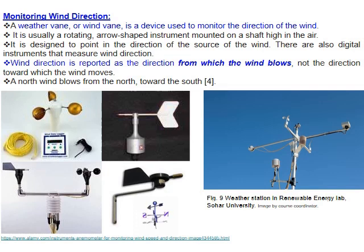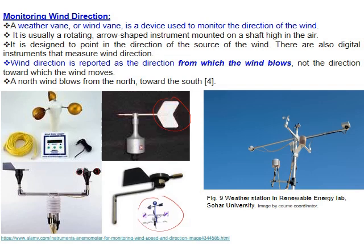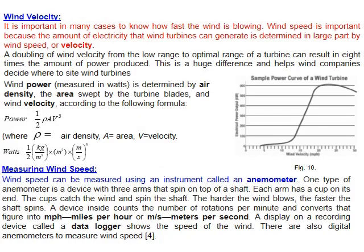To measure wind, we use two instruments: a wind vane to indicate wind direction, showing from which direction the wind is coming; and an anemometer with three rotating cups to measure wind speed. You can see our weather station at Sohar University on the engineering building, with the three-cup anemometer measuring wind speed.